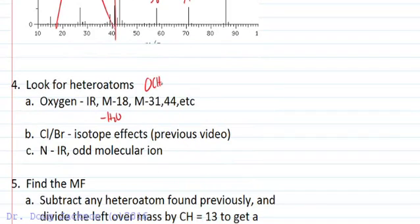Methoxy would be M minus 31. Oxygen weighs 16, methyl weighs 15. So 31 might indicate loss of a methoxy or an ethoxy here with 44. Easiest place to go for oxygen though is the IR. Look for a CO double bond, an OH and something like that.